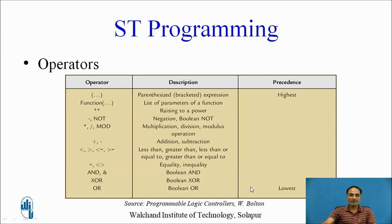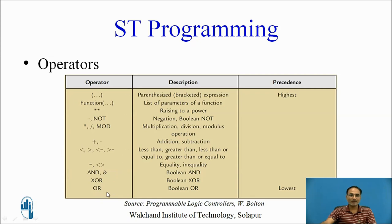Before going into the details of structured text programming, let us go through the operators. These operators are listed from highest to lowest precedence. Brackets have the highest precedence, while the OR operator has the lowest. The order is: brackets, function invocation, exponentiation (power), NOT, multiplication/division/MOD, addition/subtraction, comparison operators (less than, greater than, less than or equal to, greater than or equal to), equality/inequality, Boolean AND, Boolean XOR, and Boolean OR.